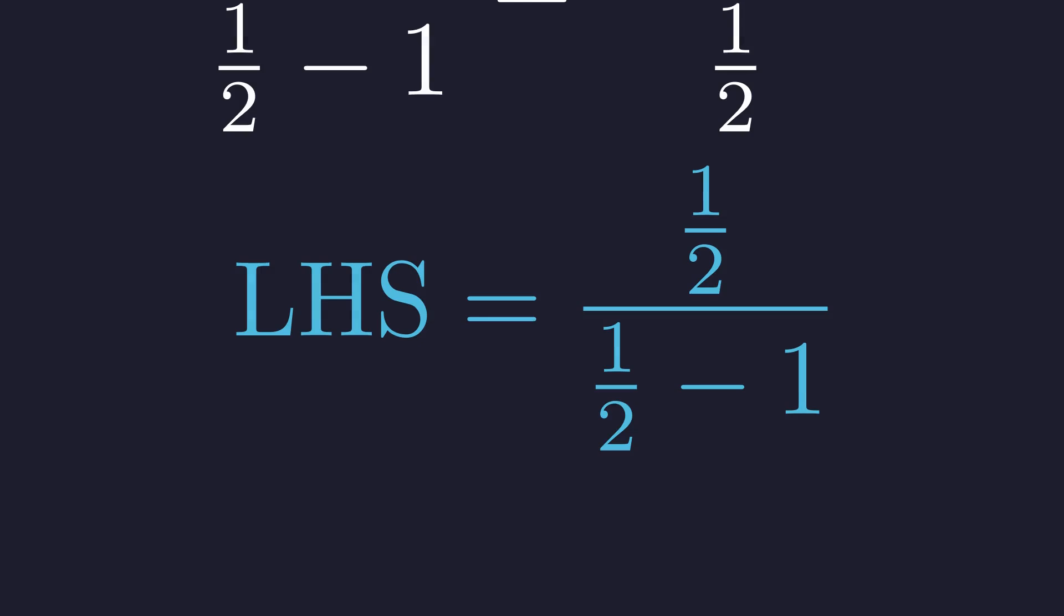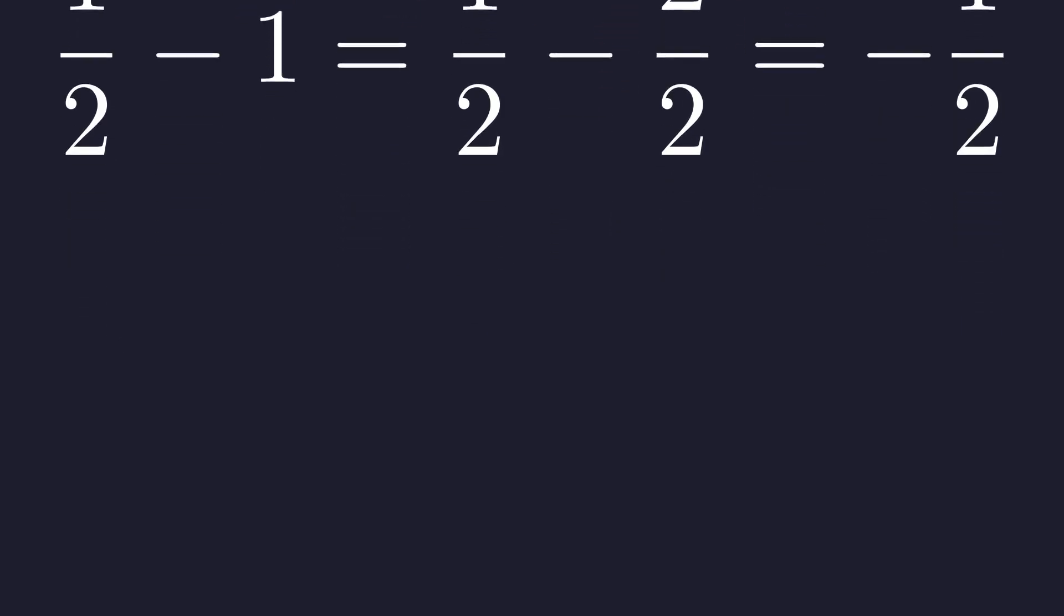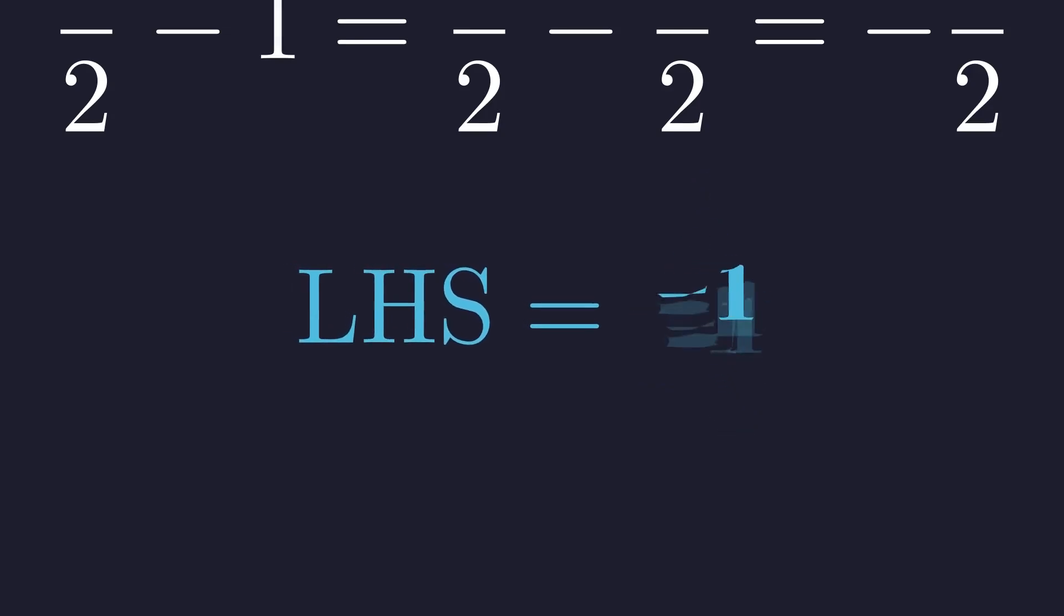Starting with the left side, let's work out that denominator first. One half minus one. To compute this, we need a common denominator. One is the same as two halves, so one half minus two halves gives us negative one half. Plugging that back in, we have one half divided by negative one half. A number divided by its negative is always negative one.